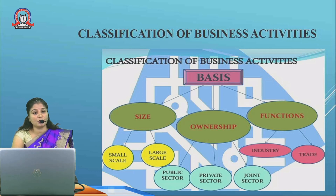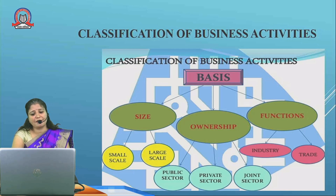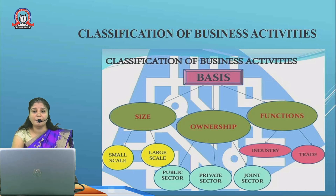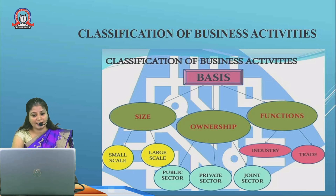Large scale industries means running the business on a very large scale — for example, the cotton textile industry running in Maharashtra. On the basis of ownership, we can classify into three categories: public sector, private sector, and joint sector. Public sector means owned, managed, and controlled by the government. Private sector means owned, managed, and controlled by individuals. In joint sector, there is a mixture of private and public sector — some industries are managed by both.